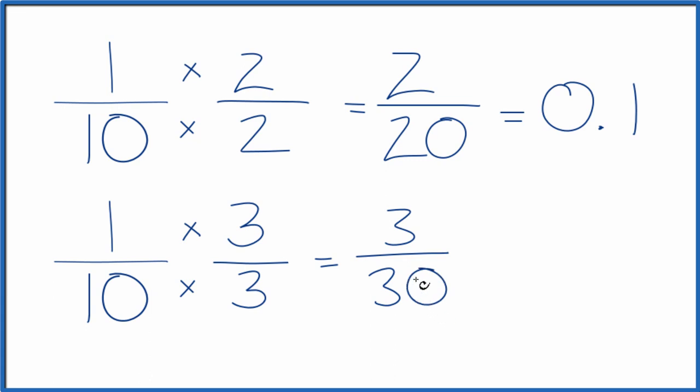So 3/30 is another equivalent fraction for 1 tenth. And if you divide 3 by 30, you'll get 0.1, same as 1 tenth.